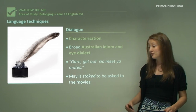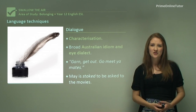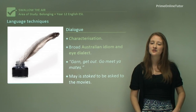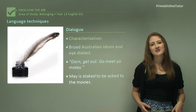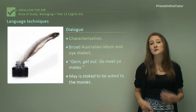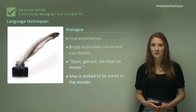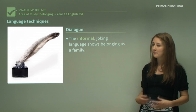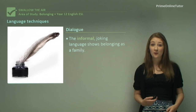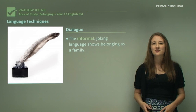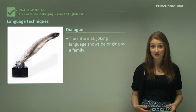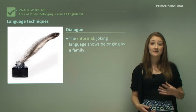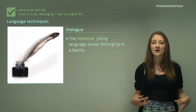You also get the idea that Mae is 'stoked' to be asked to the movies. These bits of interesting colloquial language are just chucked into that really beautiful poetic material to make it seem like a very realistic, modern text that teenagers and young people are interested in reading. The informal, joking language shows belonging as a family — it's a really useful way of demonstrating belonging through the way that characters as a family are able to talk and interact through dialogue, finding that sense of belonging through conversation.